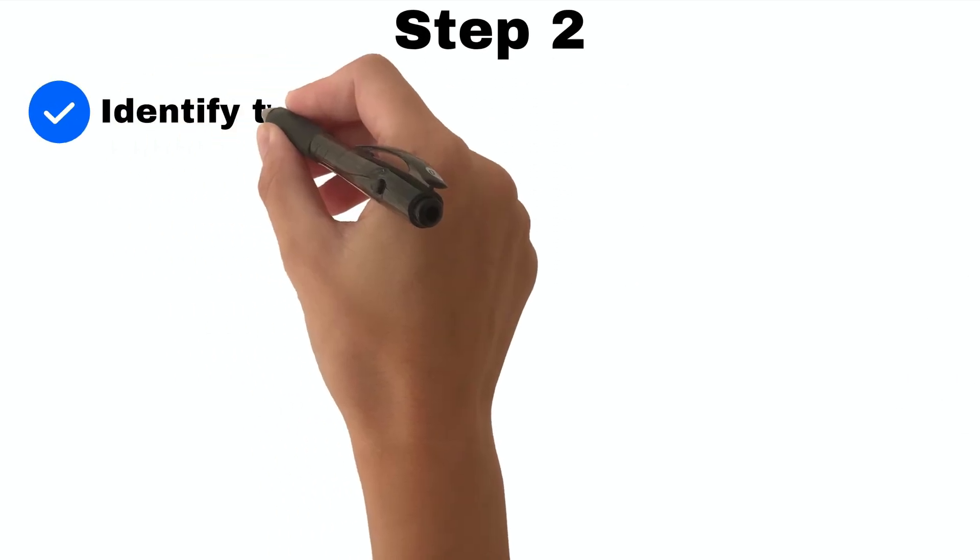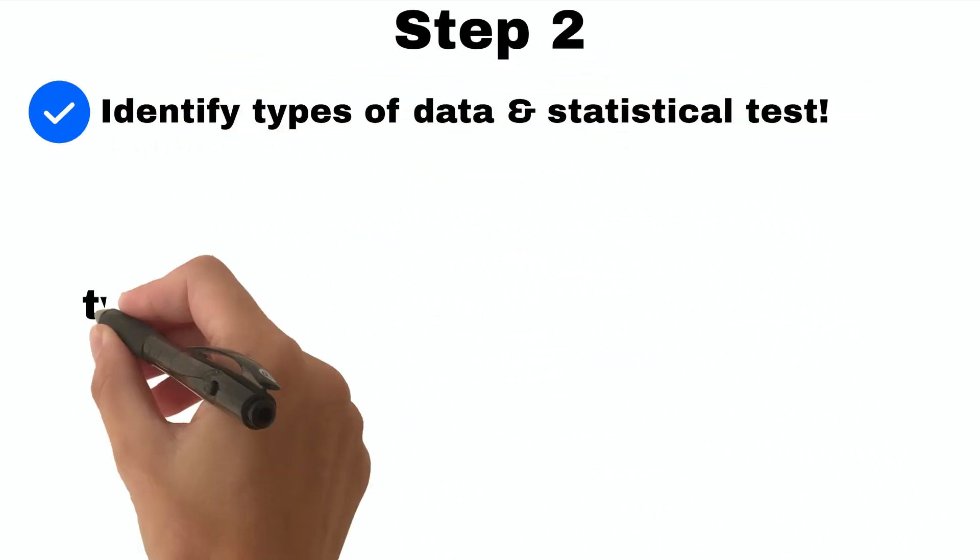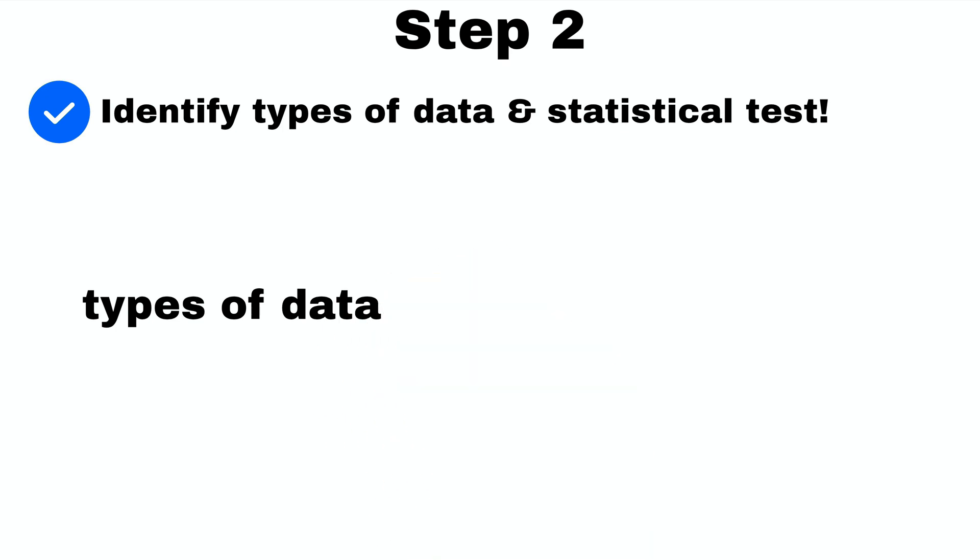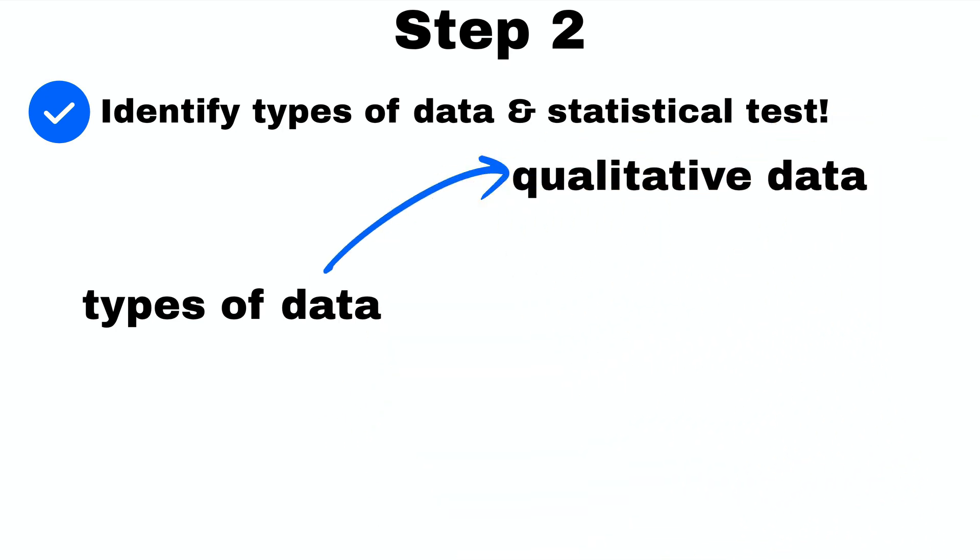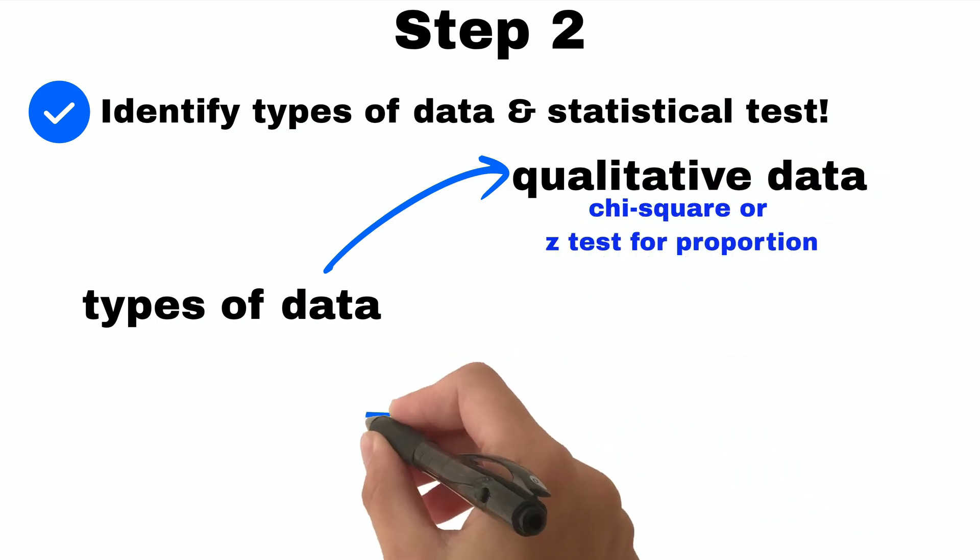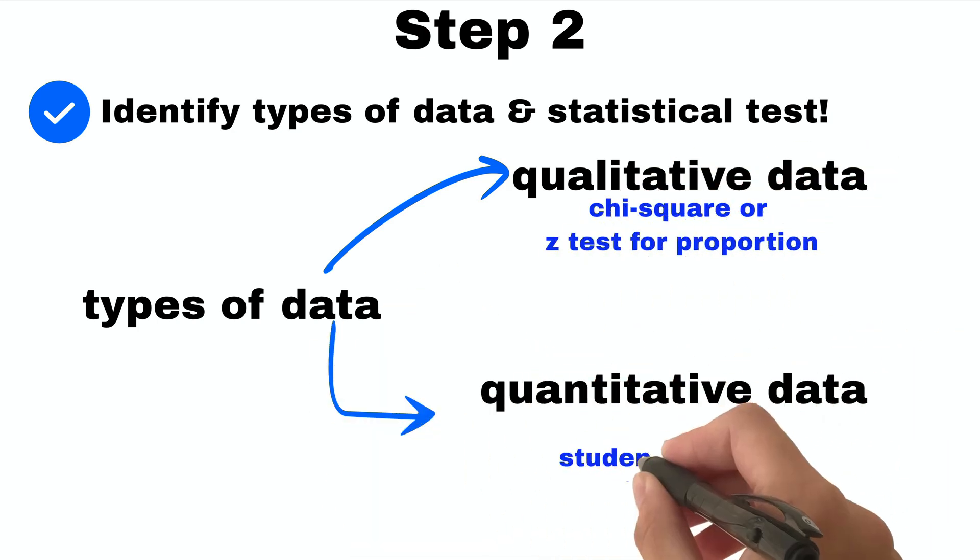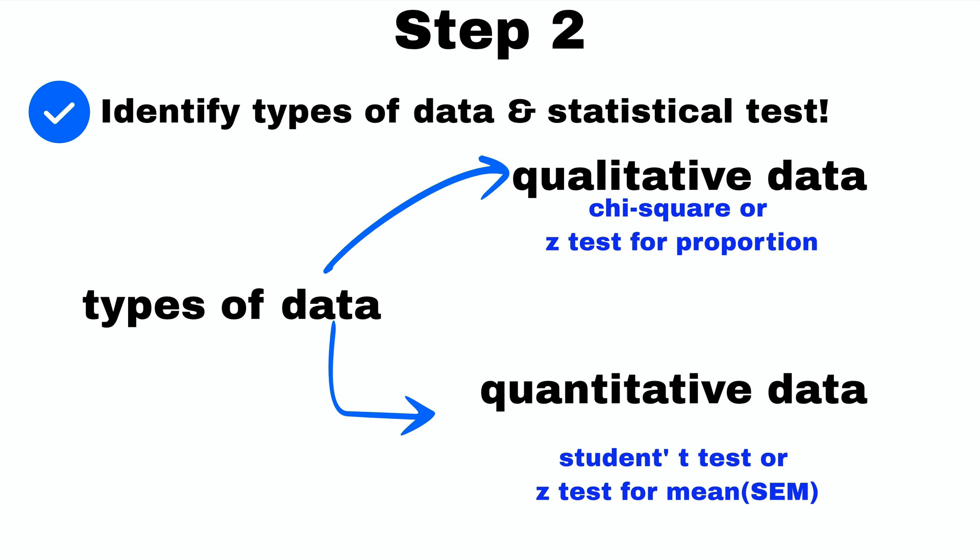Step 2: Identify and write down the statistical data that has been given and which statistical test you are going to perform. Types of data are basically two types: qualitative data where you can perform chi-square or z test for proportion, and quantitative data where you can perform student t test or z test for standard error of difference between two means.